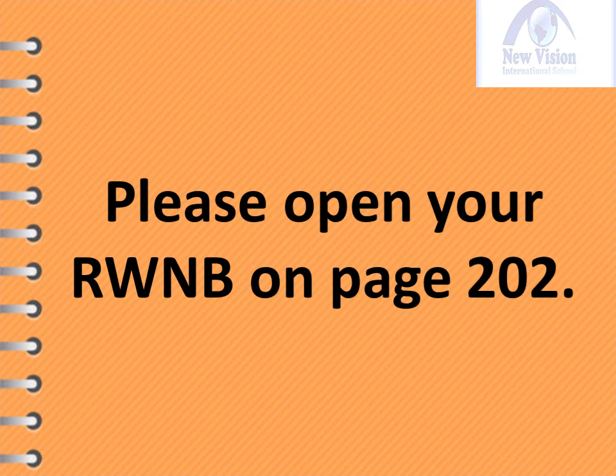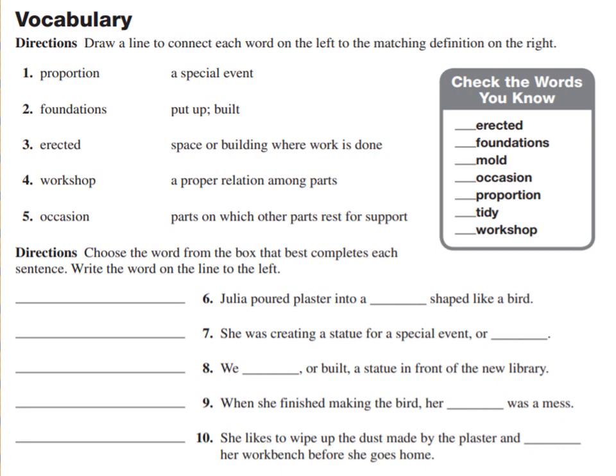I hope that you've learned all our vocabulary words today. For our activity, please open your Readers and Writers Notebook on page 202 — Vocabulary. Directions: Draw a line to connect each word on the left to the matching definition on the right. Number one: proportion. Number two: foundations. Number three: erected. Number four: workshop. Number five: occasion. For numbers six to ten, choose the word from the box that best completes each sentence and write the word on the line.